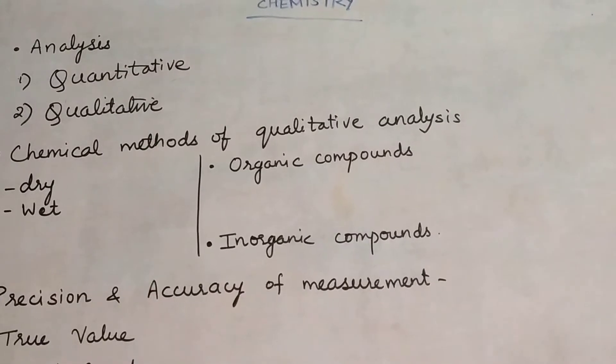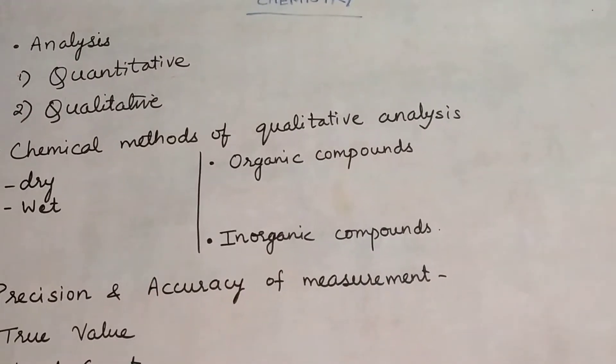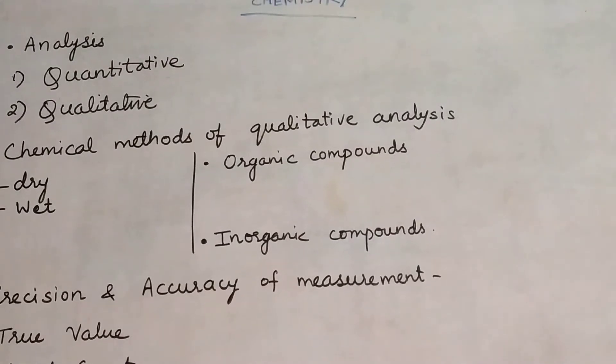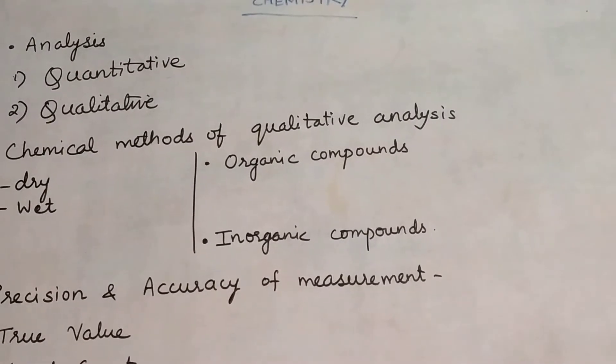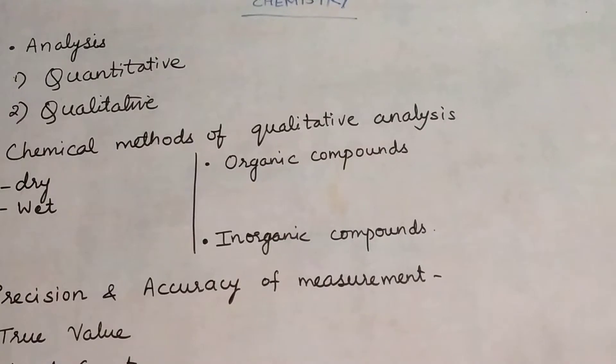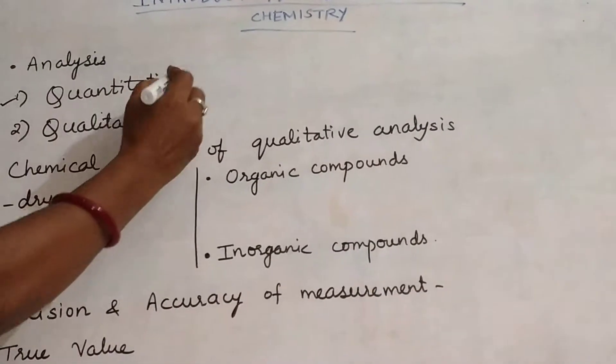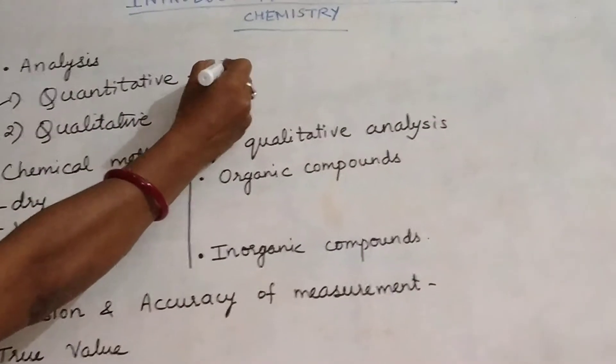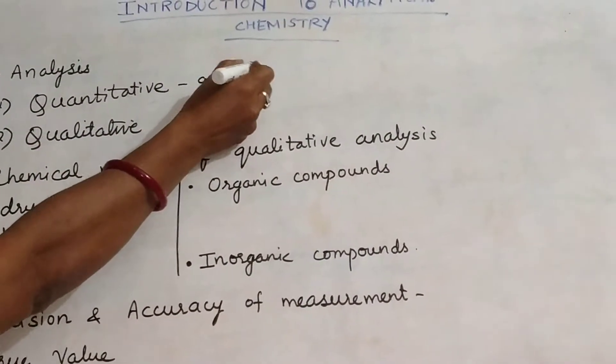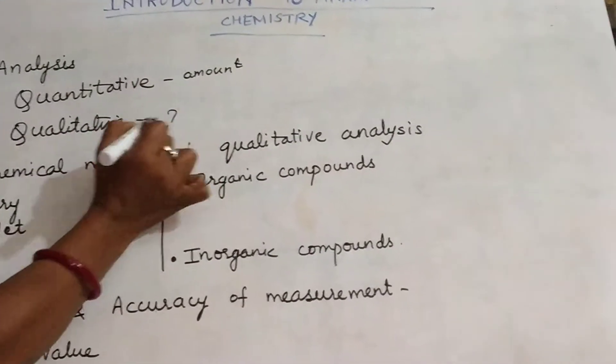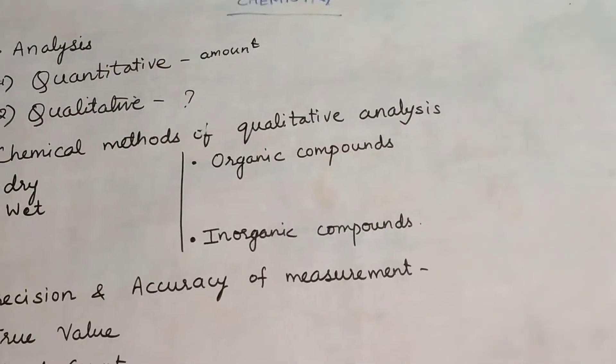Other is qualitative. What is qualitative? Qualitative means which particular elements are present in that compound. In quantitative we are finding amount, here we are trying to find which substances are present. That is called qualitative.